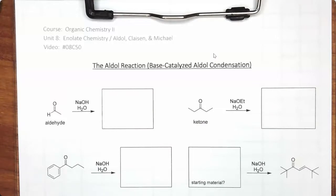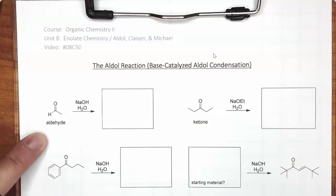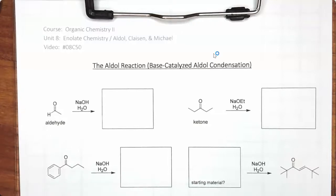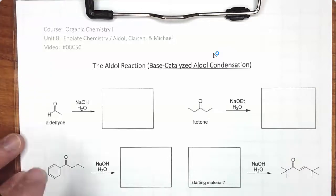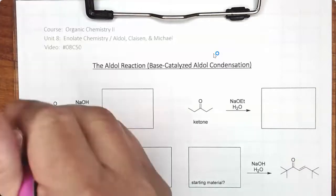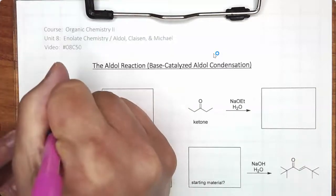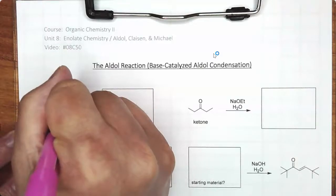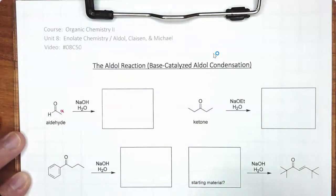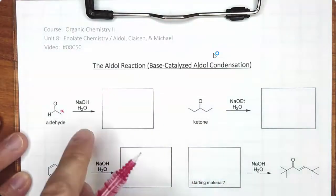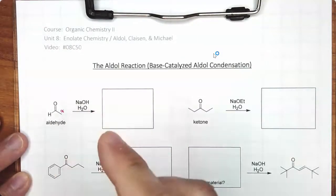Let me show you the mechanism for the first reaction. Before we get started with the mechanism, let us evaluate our starting material. We have an aldehyde, we know that this alpha hydrogen is fairly acidic, and we have a strong base.